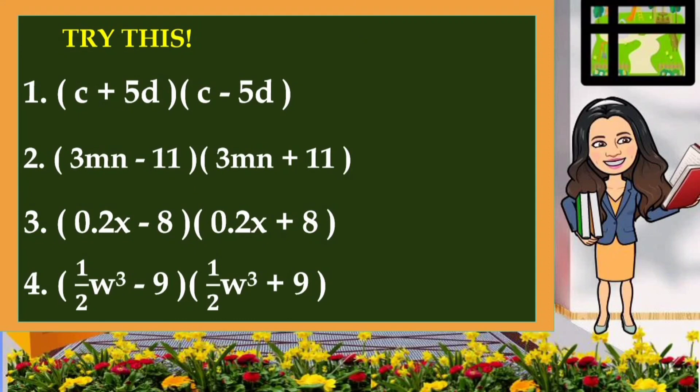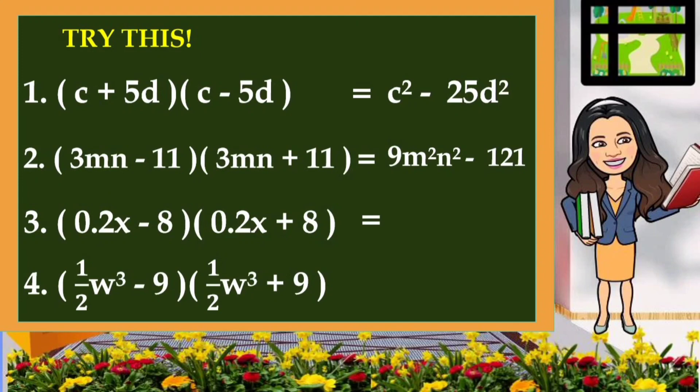Now try to solve the practice problems using our method. Number 1: the result is C squared minus 25D squared. Number 2: 9m squared n squared minus 121. Number 3: 0.04x squared minus 64. And the last one: one-fourth W raised to 6 minus 81.